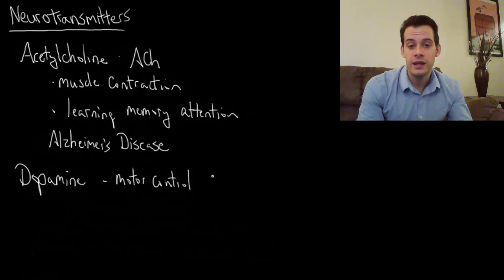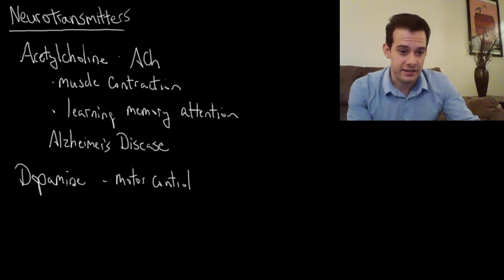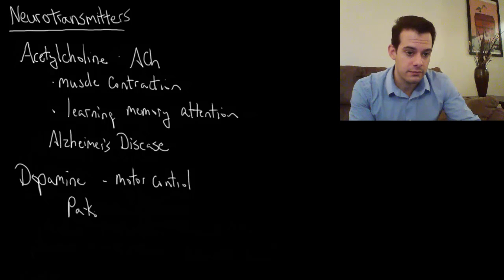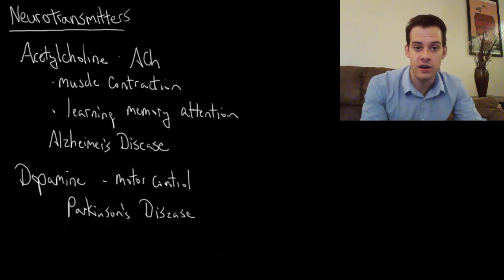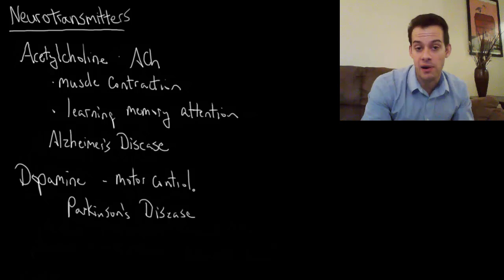One of the ways we can see this role is in Parkinson's disease. One of the things that happens in Parkinson's disease is deterioration of these dopamine producing neurons in the substantia nigra. The result is that patients have problems controlling their movements. They have shakes and tremors, the characteristic symptoms of Parkinson's disease.